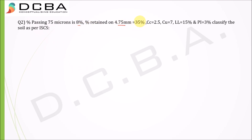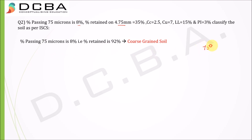Question 2: Percentage passing 75 microns is 8%, percentage retained on 4.75 mm is 35%, coefficient of curvature is 2.5, and coefficient of uniformity is 7. Since only 8% is passing through 75 microns and 92% is retained on it, it is a coarse-grained soil. Since only 35% is retained on 4.75 mm, 65% is passing through it, meaning it is a sand.